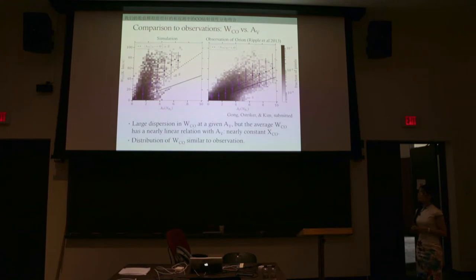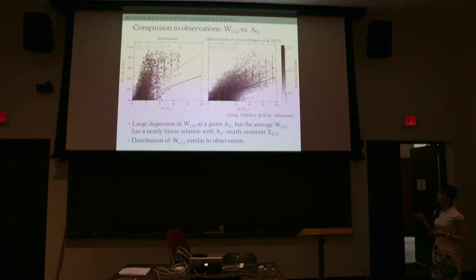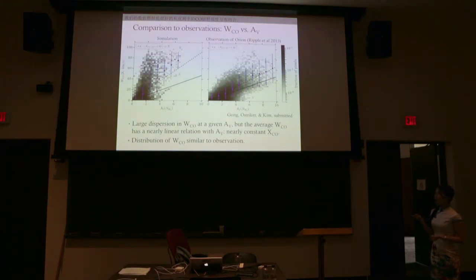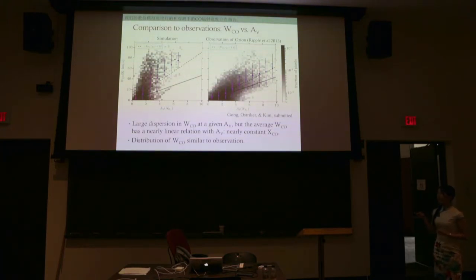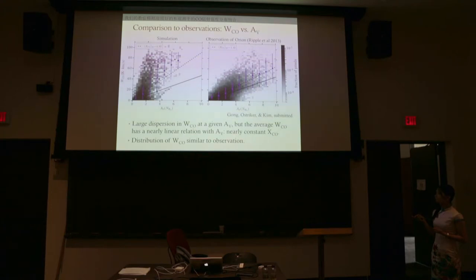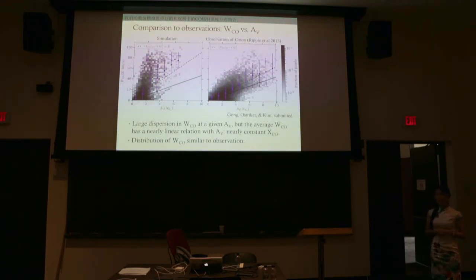We compared the distribution of W_CO to observations. The simulation and observational distributions are actually quite similar. Given the extinction A_B, there is a large dispersion in XCO on the y-axis; however, the average value of W_CO — marked by the magenta dot — has a nearly linear relation with column density on the x-axis, meaning a nearly constant average XCO across different A_B. This is encouraging — we can reproduce not only the average XCO in the molecular cloud, but also the distribution of W_CO compared to observations.